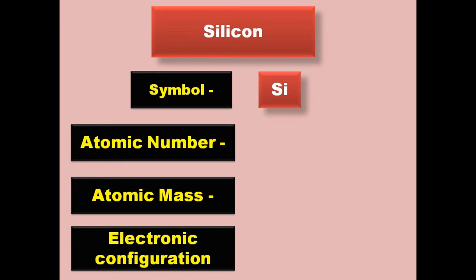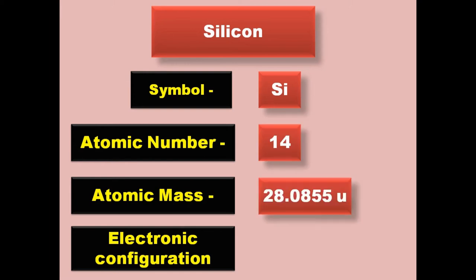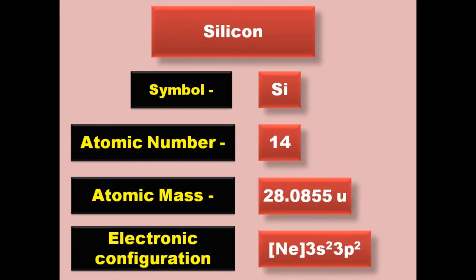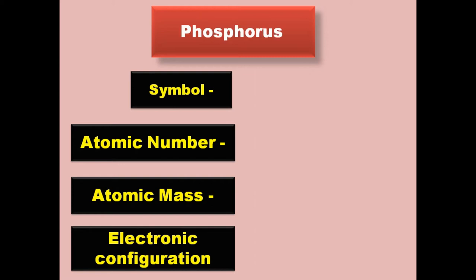Silicon has symbol Si, atomic number 14, atomic mass 28.0855, electronic configuration [Ne] 3s2 3p2. Silicon is a metalloid and exists in solid form at room temperature.